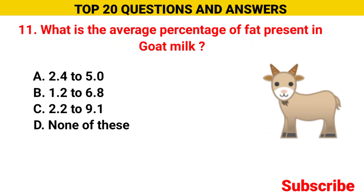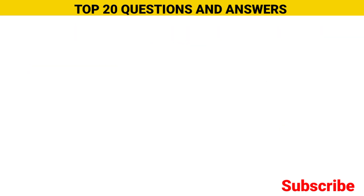What is the average percent of fat present in goat milk? Option A 2.4 to 5.0, option B 1.2 to 6.8, option C 2.2 to 9.1, option D none of these. The correct option is option A, 2.4 to 5.0.